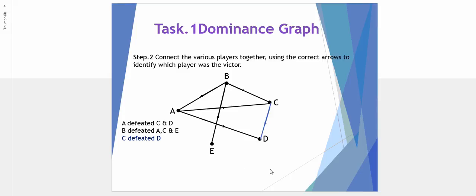C defeated D, and D defeated B. E defeated A, E defeated C, and finally E also defeated D. So here we've generated our completed dominance graph.